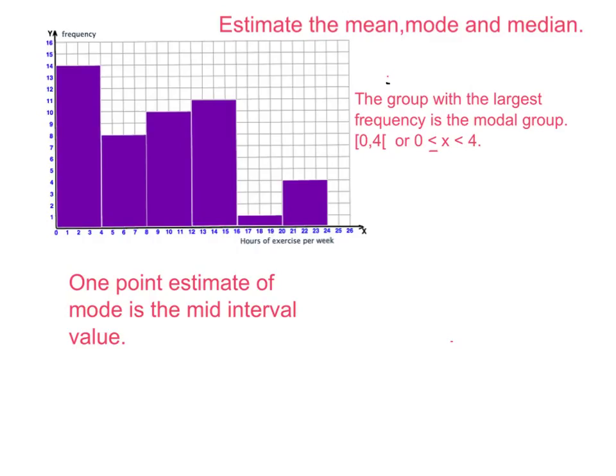Welcome back. We'll look at the easiest question first. In this case, it's the mode. The group with the largest frequency is the modal group. So in this case, which is the group with the largest frequency? Very good. This one, right? That is the group from 0 to 4, including 0 but not 4.